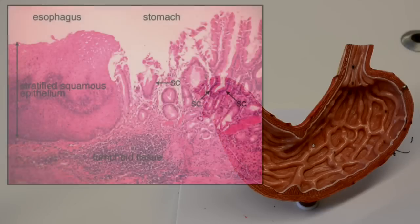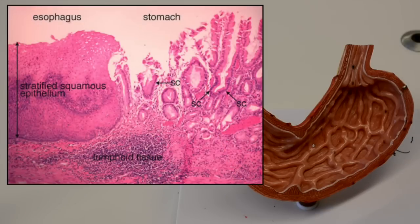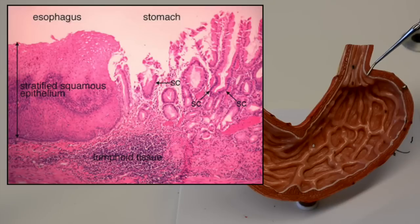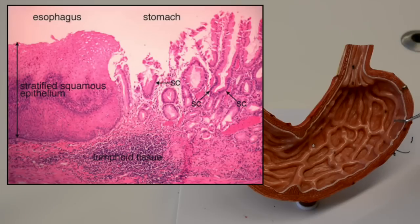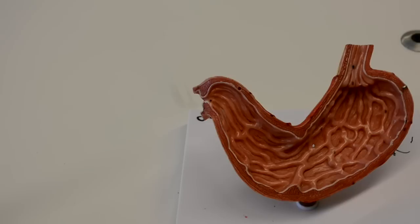We have stratified squamous tissue in the esophagus that very abruptly changes to simple columnar when it enters the stomach, and it remains simple columnar throughout the rest of the digestive system until we get to the anus.